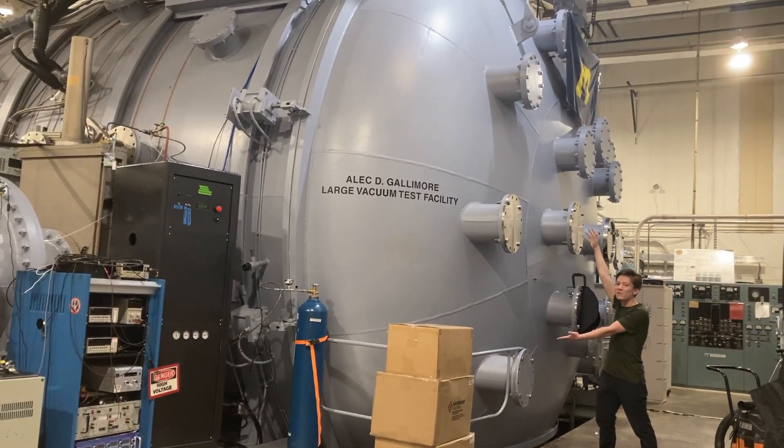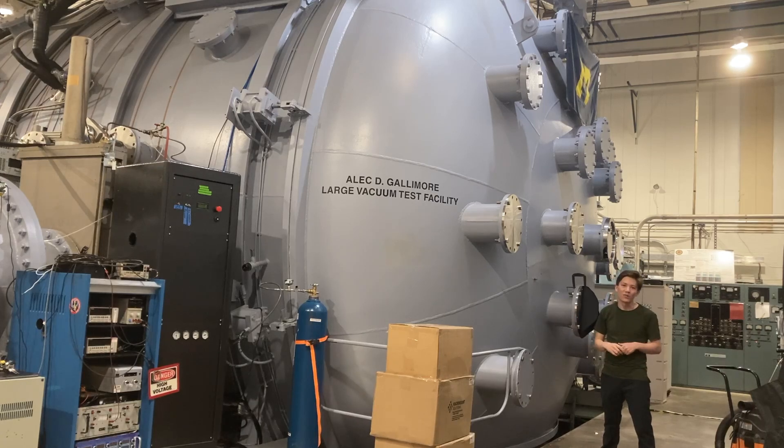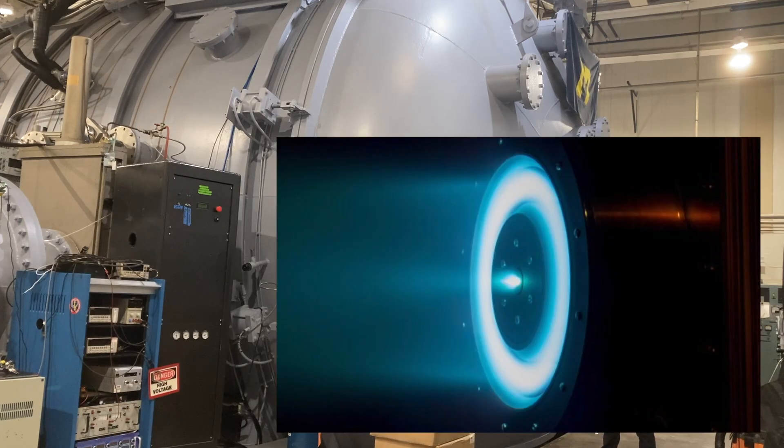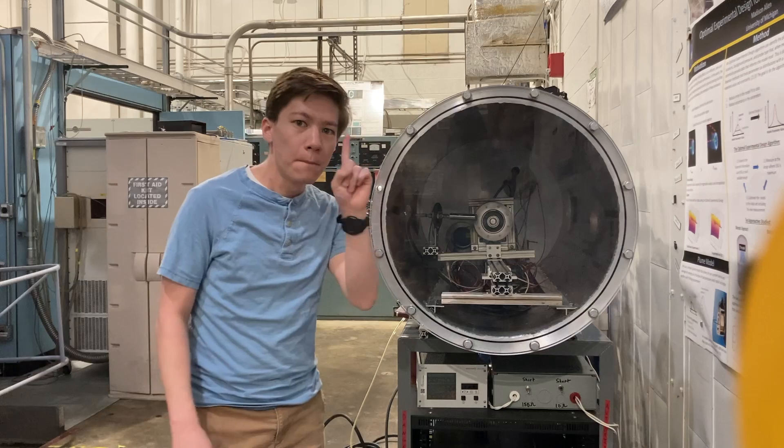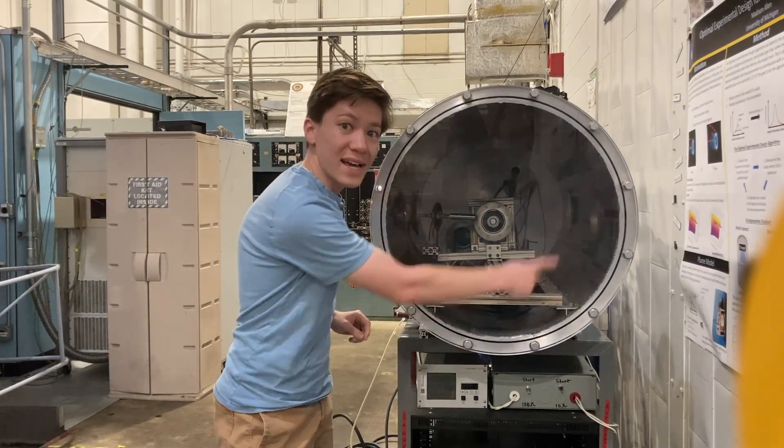This is the large vacuum test facility at the University of Michigan where we test big ion thrusters, like the H9 or the X3. But there's a problem. Our thrusters erode the walls of our test chamber.